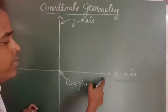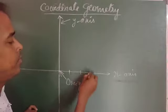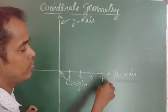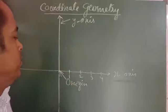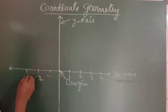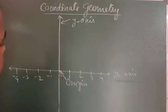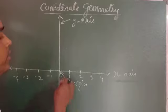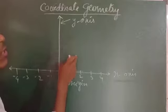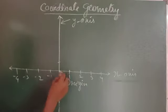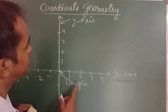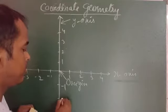The right part of the horizontal line, that is the x-axis, is positive — we plot positive numbers there. On the left side we plot negative numbers. Similarly, the upper portion of the y-axis is positive and the lower portion is negative.